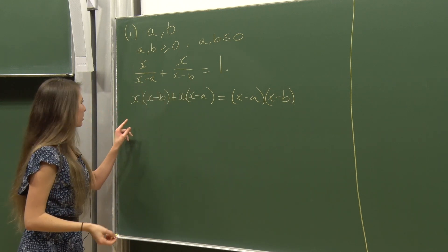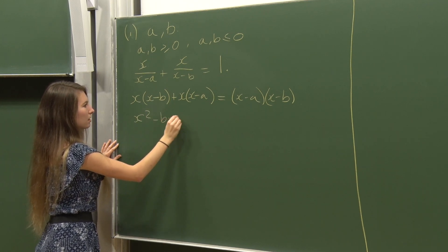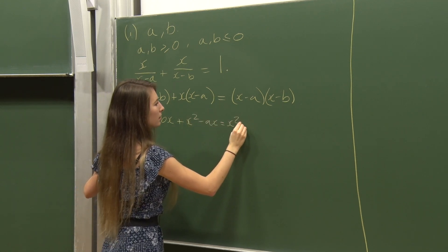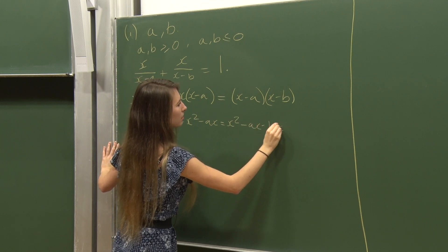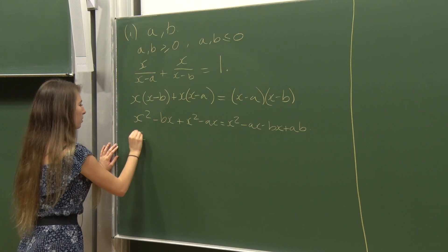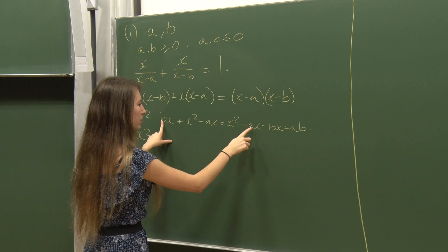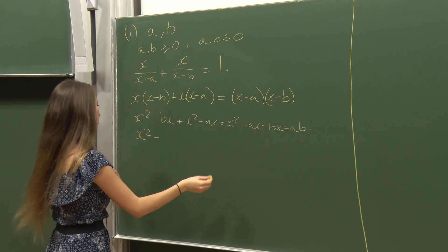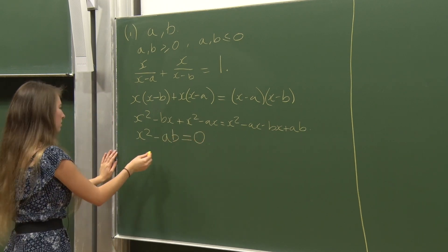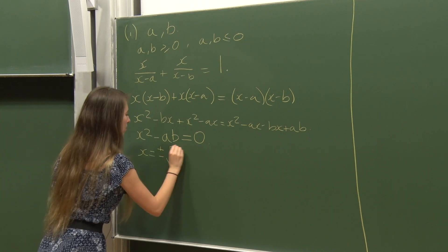I can see I'm going to end up with a quadratic, so let's multiply things out and rearrange. So x² - bx + x² - ax equals x² - ax - bx + ab. Gathering everything together, I end up with x² - ab = 0, which means x = ±√(ab).